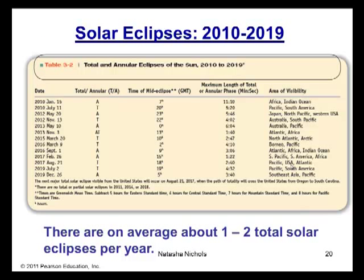Here is a table of solar eclipses for the years 2010 to 2019. There are, on average, about one to two total solar eclipses per year. But as you notice in the last column, you have to be within the right area of visibility to observe them. The next one that's coming up is going to be November 13, 2012. As you notice right here, it's going to be a total solar eclipse. And if you go to the last column, in order to observe that, you have to travel to Australia or the South Pacific.